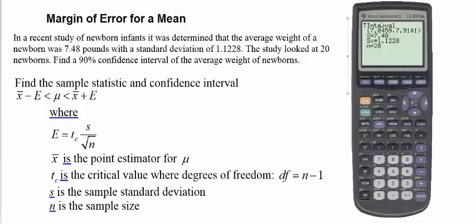Here is our confidence interval. It looks like it stretches from about 7.05 to 7.91. So most babies are between 7 and 8 pounds given the mean and the standard deviation and the sample size.